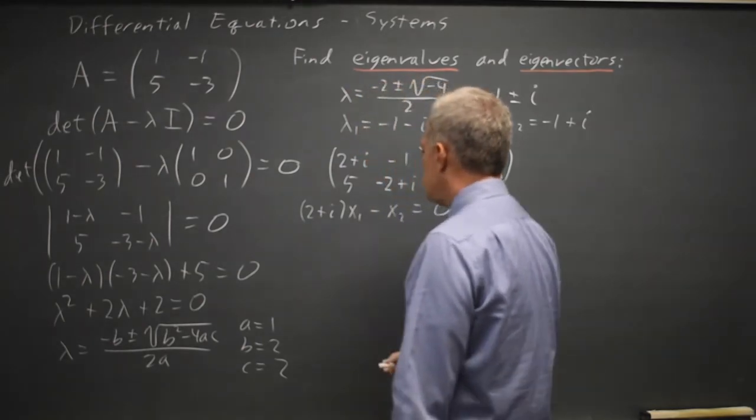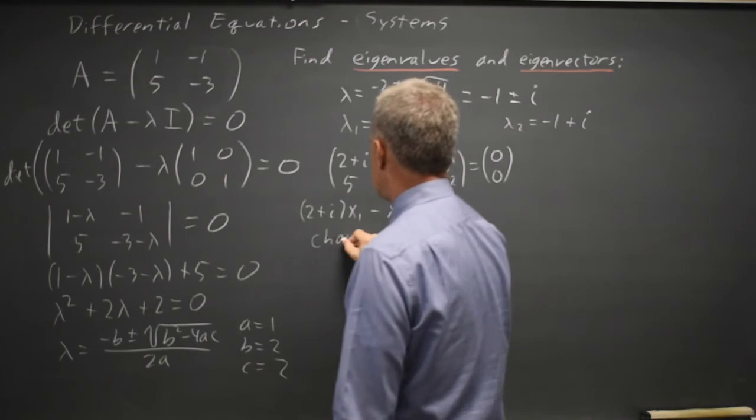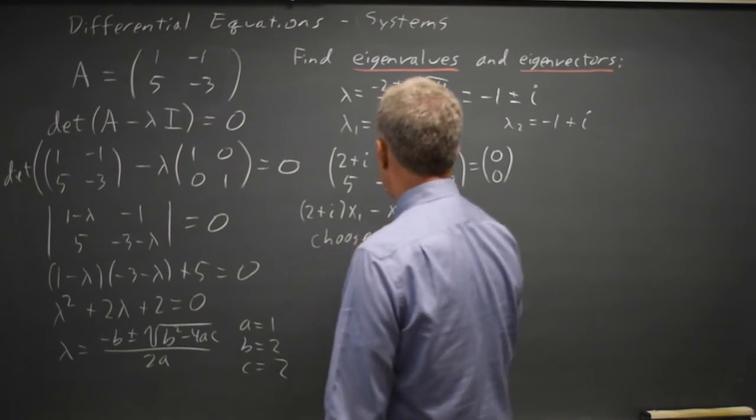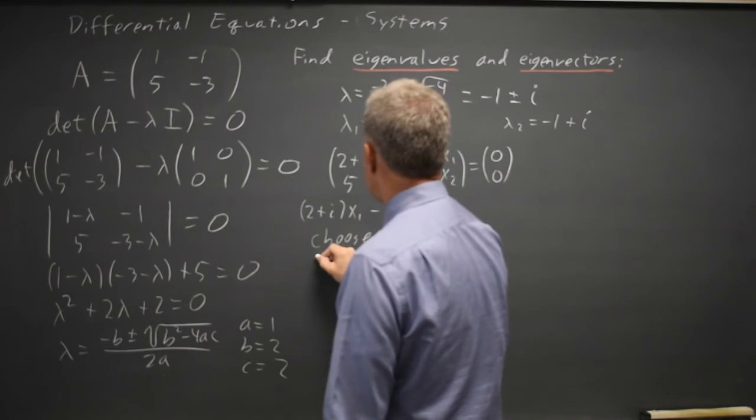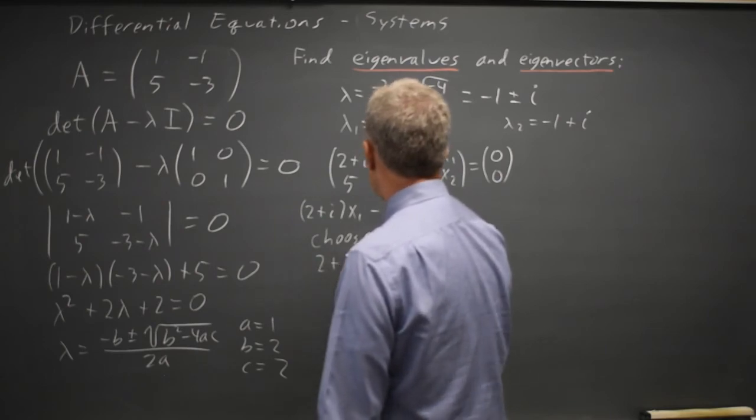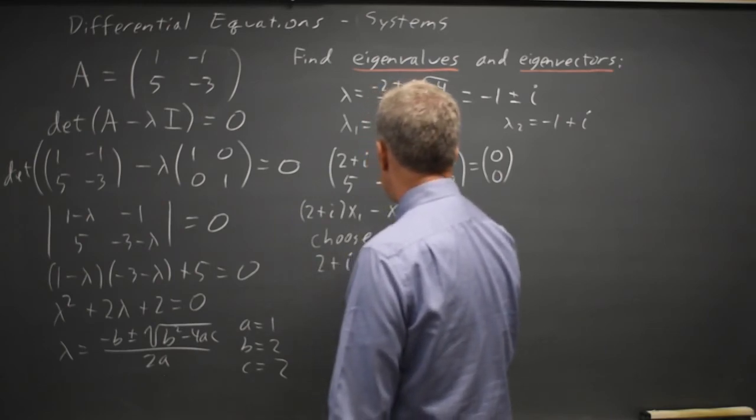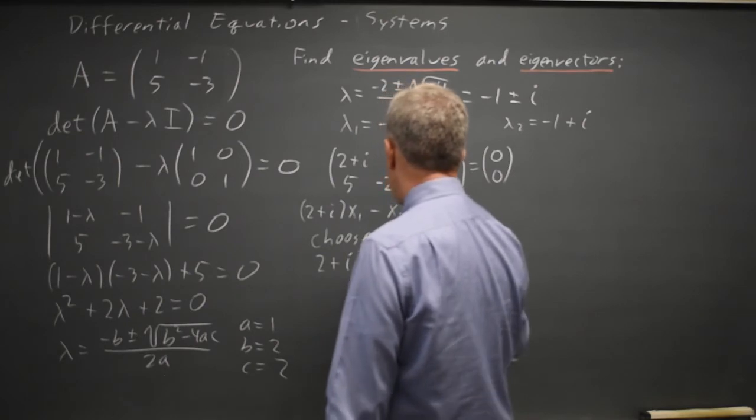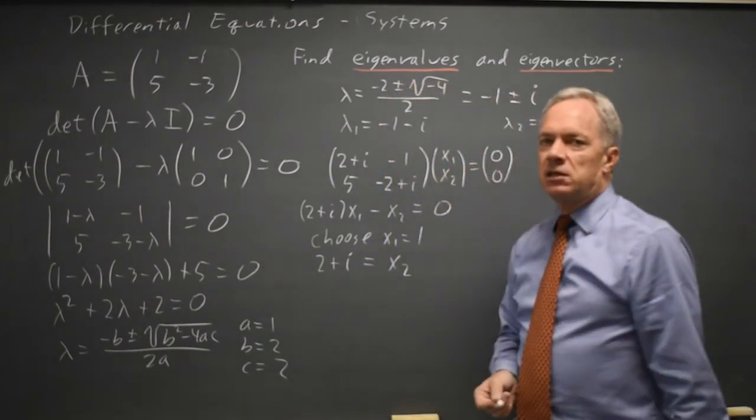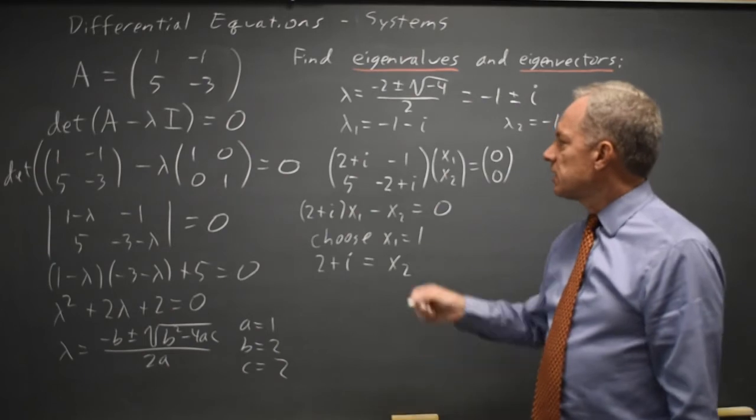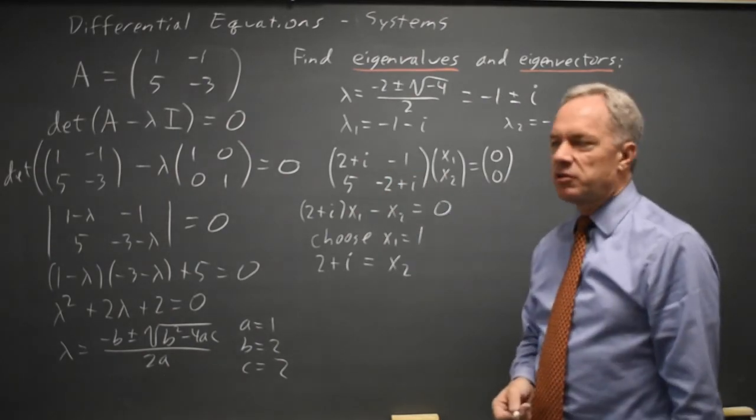And if I choose x1 equals 1, then I have 2 plus i minus x2 equals 0. So 2 plus i equals x2.